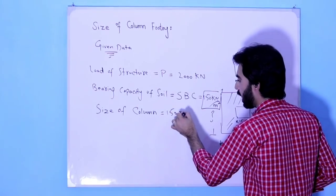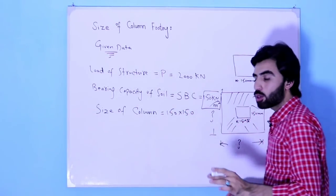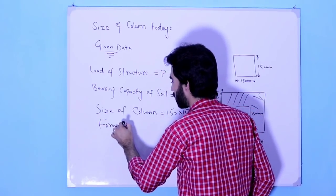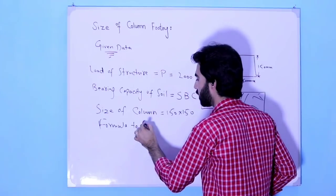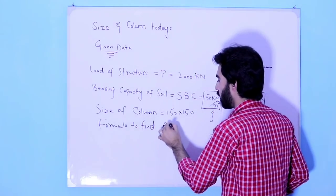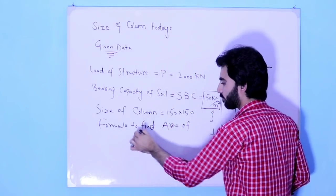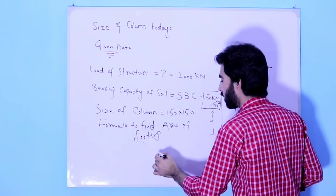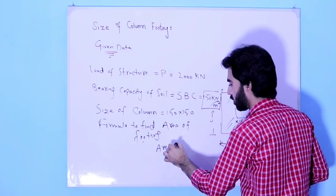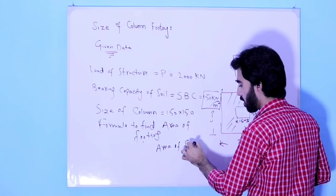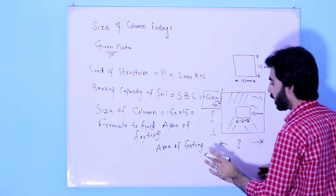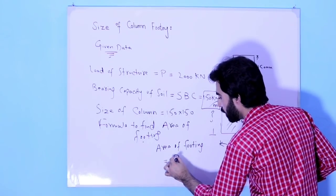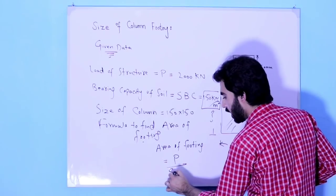The size of the column is already given as 150 millimeter by 150 millimeter. Now here is the formula to find the area of the footing. The area of footing is equal to P divided by SBC — that is, the load divided by the soil bearing capacity.